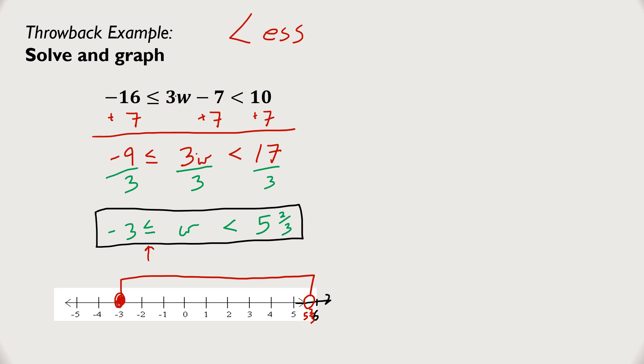We can check our answer. To check it, just pick a number from the region. I think 0 is the easiest, but I could have just as easily picked 1 or negative 2, or even pi would work. Substitute it into the original compound inequality. What you see here is negative 16 is less than or equal to negative 7, which is less than 10. That is true, and most likely our answer is correct.